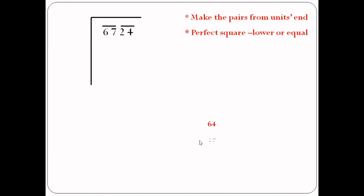We could also choose 49, but we have to choose the perfect square closest to 67, so 64 is the better choice. We know that 64 is the perfect square of 8. So we write the square root of 64, which is 8, to the left-hand side of the number. This gives us our first digit, which is 8.